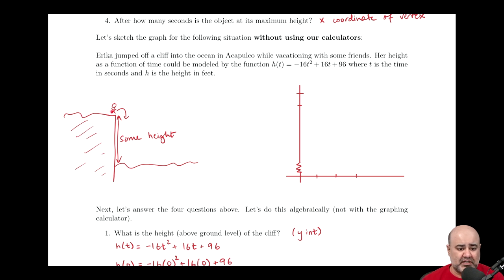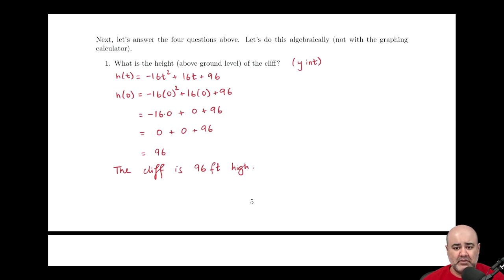So there's some cliff here, here's Erica, she's having fun, here's the ocean underneath, and then there's some height. I don't know what that height is, I don't know how tall that cliff is, and it's probably something we're going to have to find. And Erica, being very athletic, is going to jump up and then sort of do a flip and then come back into the ocean.